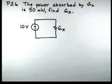Here's the problem-solving video for problem 2.6. It says the power absorbed by GX is 50 milliwatts. Find GX. In our circuit, we've got a 10-volt source connected across GX.